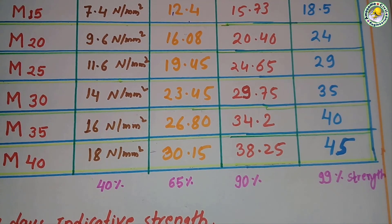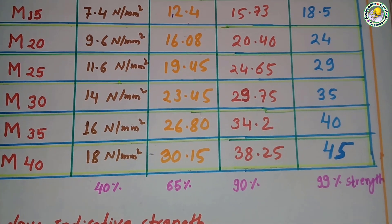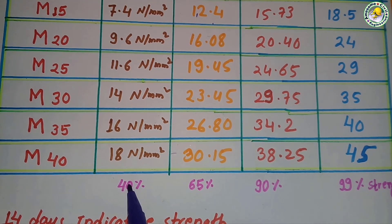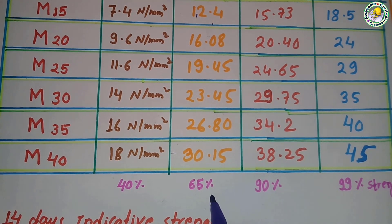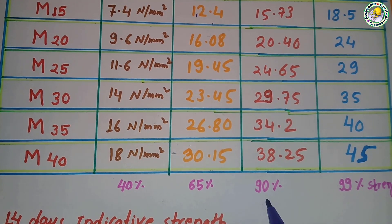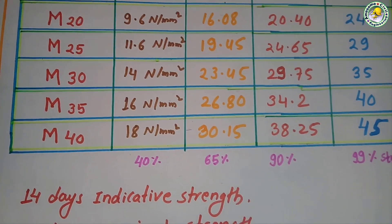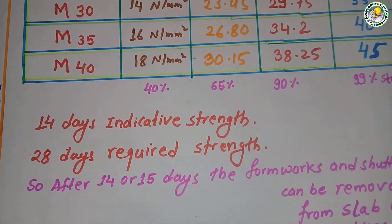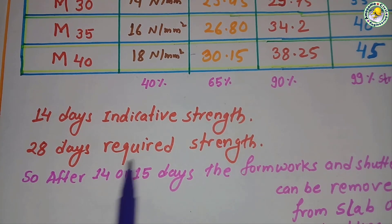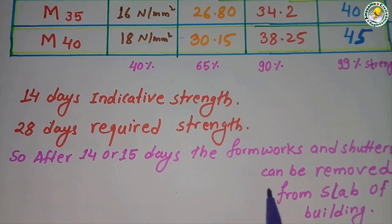After three days, 40 percent of the strength can be taken by the concrete which is casted; 65 percent after seven days, 90 percent after 14 days, and 99 percent at 28 days. 14 days indicates the indicative strength; 28 days is the required strength.